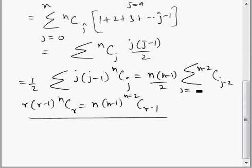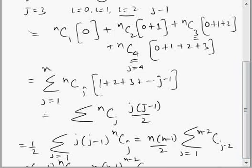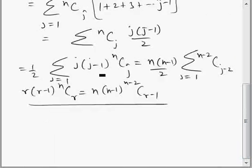where j varies from 0 to n, or there is no contribution of 0 term, 1 to n, because you can see from the side j cannot be 0, so it should have been 1. And again we can say j equal to 1 is contributing 0 here, if I put j equal to 1 this is 0, so I start from 2. j varies from 2 to n.